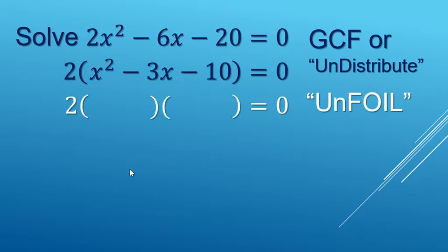Now we go to our un-foil style factoring. x is for the firsts, and then the lasts need to multiply to a negative 10 and add to a negative 3. So that's going to be a negative 5 and a positive 2.